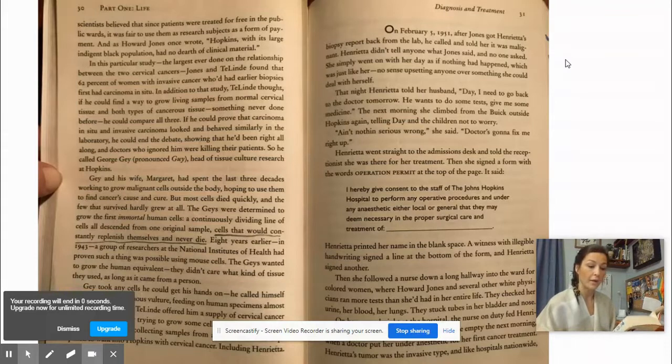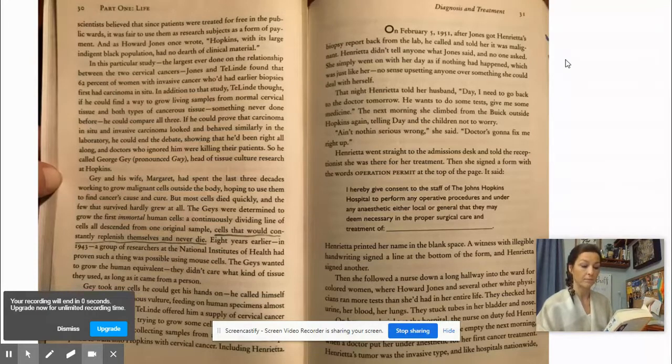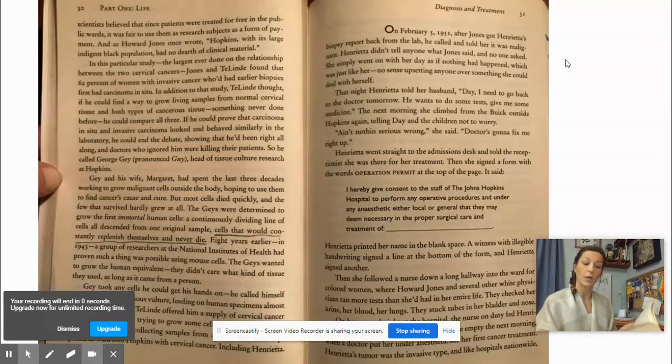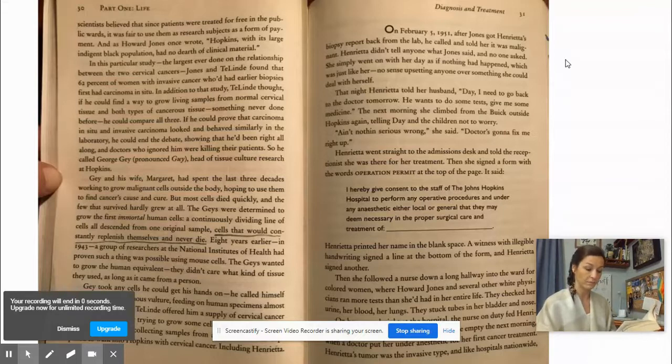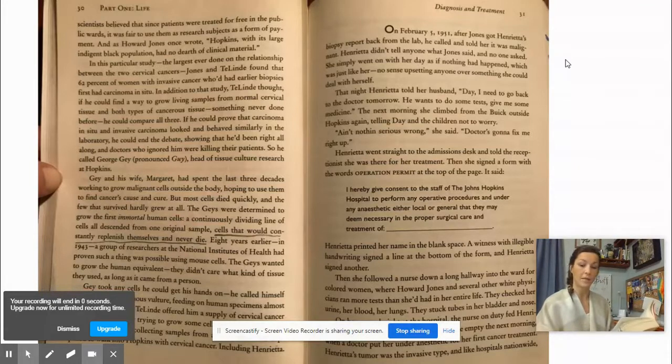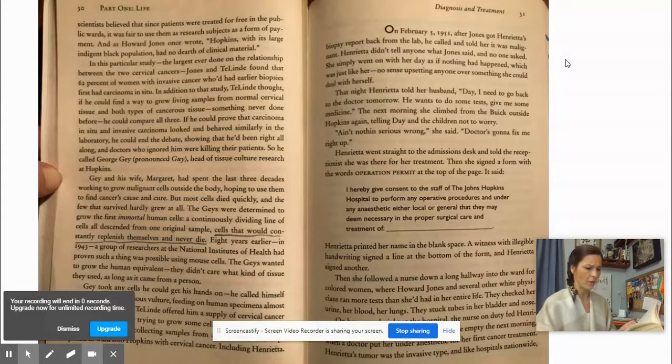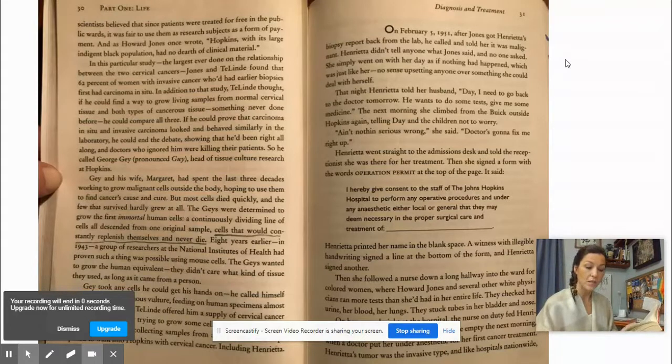On February 5th, 1951, after Jones got Henrietta's biopsy report back from the lab, he called and told her that it was malignant. Henrietta didn't tell anyone what Jones said, and no one asked. She simply went on with her day as if nothing had happened, which was just like her. No sense upsetting anyone over something she could deal with herself. That night, Henrietta told her husband, Day, I need to go back to the doctor tomorrow. He wants to do some tests and give me some medicine. The next morning, she climbed from the Buick outside Hopkins, again telling Day and the children not to worry. Ain't nothing seriously wrong, she said. Doctor's going to fix me right up.